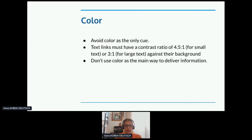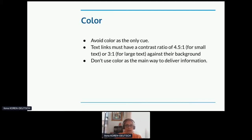You also want to avoid color as your only cue. Don't have forms that say required fields are in red — some people don't see red, or they use a screen reader where there's no color at all. You can check your contrast by doing something quilters do: converting to grayscale. Then you can really see the difference between dark, light, and middle. And you don't want to use color as the main way to deliver information — not everybody sees every color or any color at all.